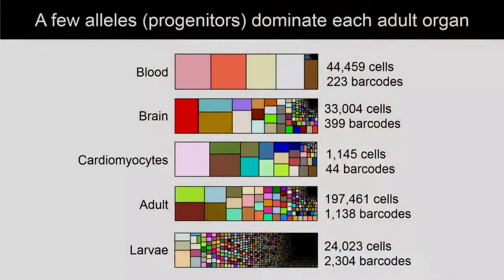The contributions to various organs of different barcodes, which we harvested and analyzed separately, are shown here with the bars. One of the surprises to us was that when we looked at adults, relatively few progenitors appear to contribute to each adult organ. When we look at blood, five alleles basically comprise over 98% of what we're seeing. Basically every organ shows the same thing to a lesser degree — in contrast with the larva, where looking at the whole larva undissected, we see a much more uniform representation of various alleles.